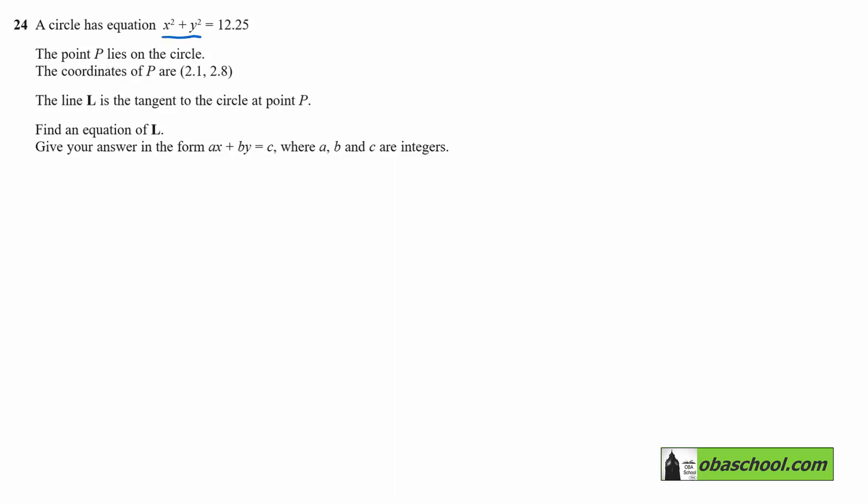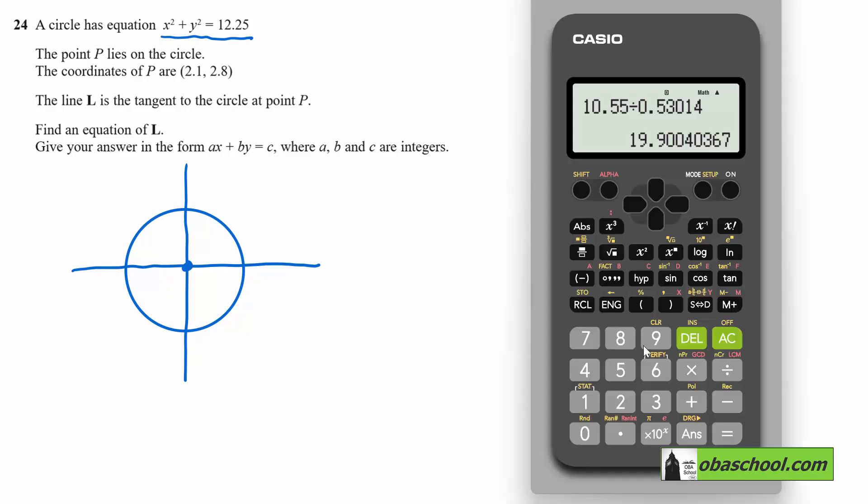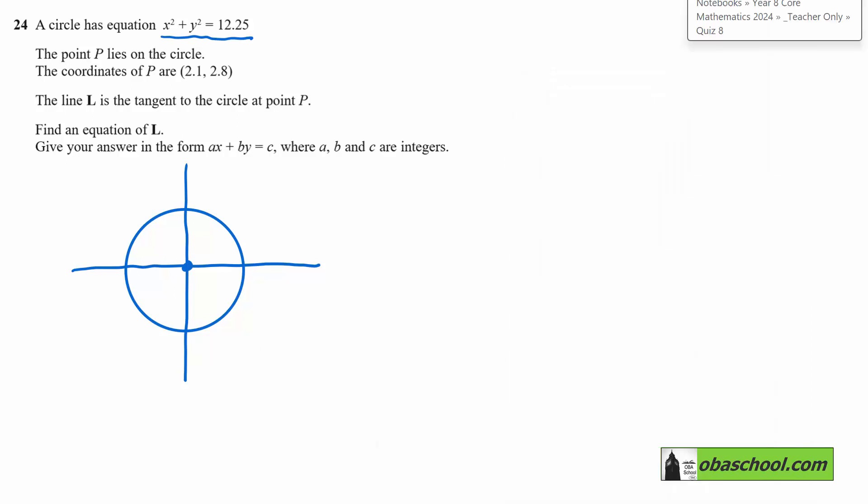A circle has equation x squared plus y squared equals 12.25. The circle is centered at the origin. The radius is the square root of 12.25, which is 3.5.